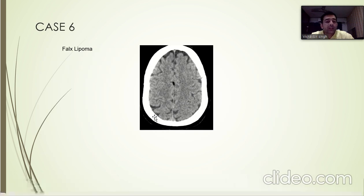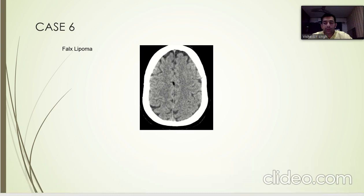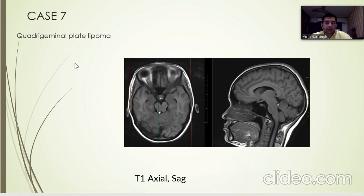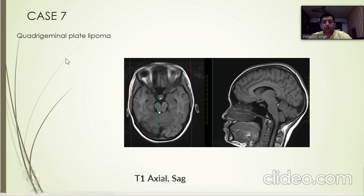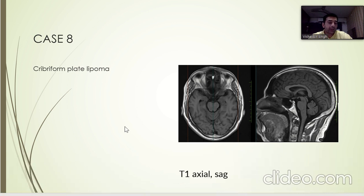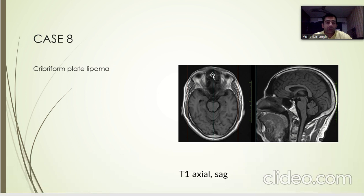Case 6 shows a well-defined hypodense lesion in the falx cerebri, which is a falx lipoma. In Case 7 we can see a well-defined hyperintensity in the right quadrigeminal cistern corresponding to a quadrigeminal plate lipoma. In Case 8 we can see a triangular-shaped, well-defined hyperintensity in the cribriform plate corresponding to a cribriform plate lipoma.